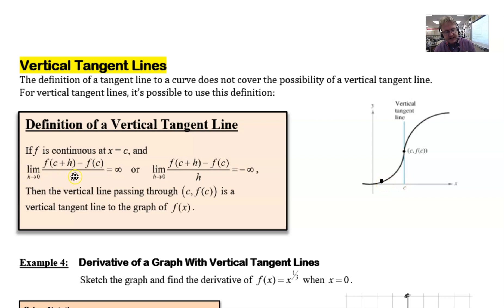As h approaches zero, that basically means the distance between that point and that x value c is going to narrow—it's going to get smaller. If I start this process of trying to find the slope of the tangent line, I certainly have some kind of slope right there. I don't know what it is exactly, but it's some positive number.